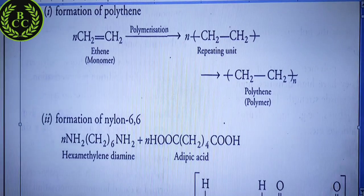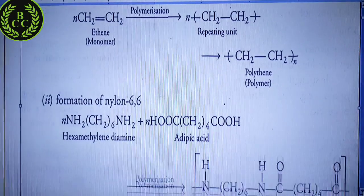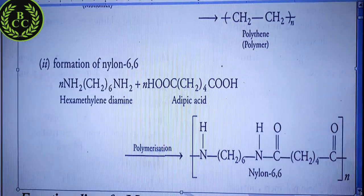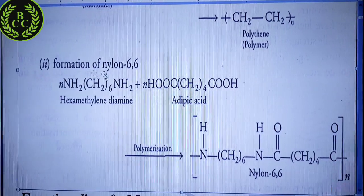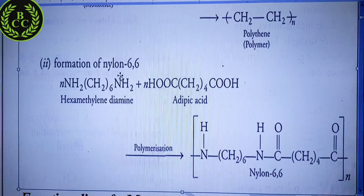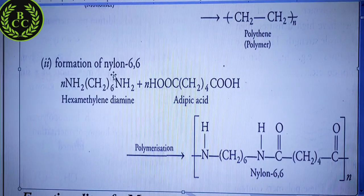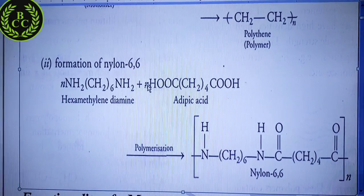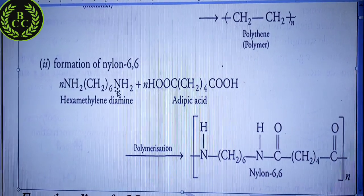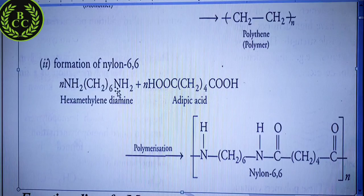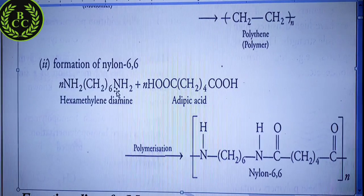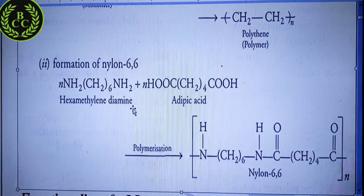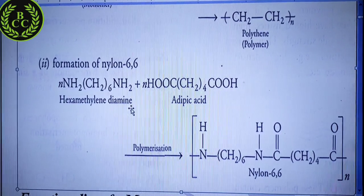For example, let us understand the formation of Nylon 6,6. Nylon 6,6 is a very important commercially used polymer. In this case, we have used a different type of polymerization. One monomer is hexamethylenediamine.